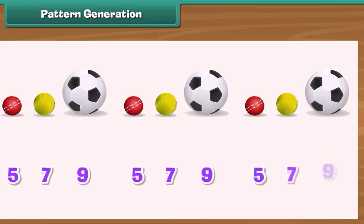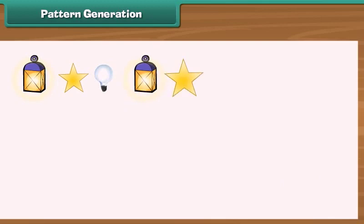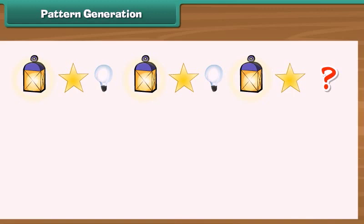Pattern generation. A pattern is a series of objects or numbers which repeat in a pre-decided manner. Look at the given pattern. Guess the next picture required to complete the pattern. There are three objects in the pattern. They appear in a particular sequence.